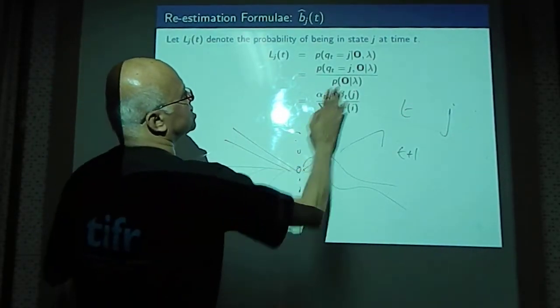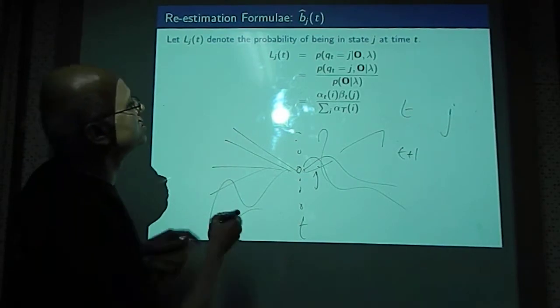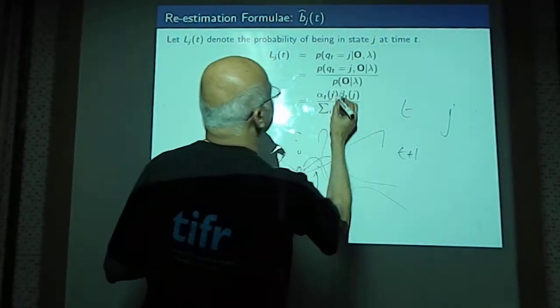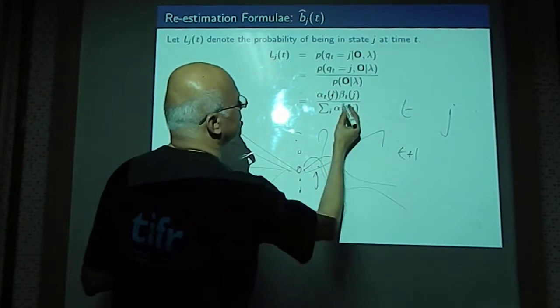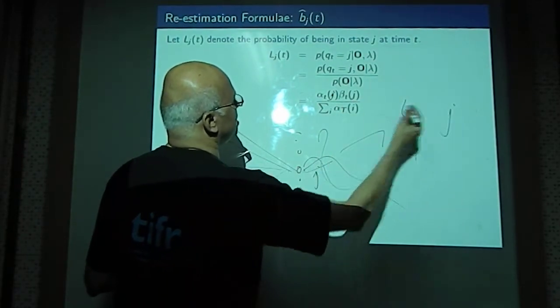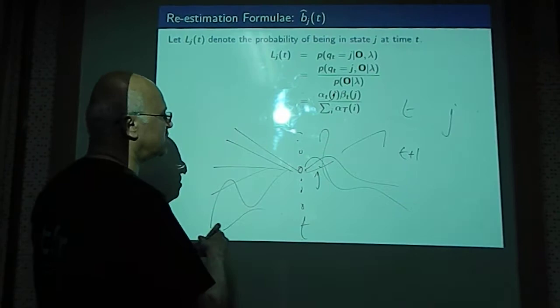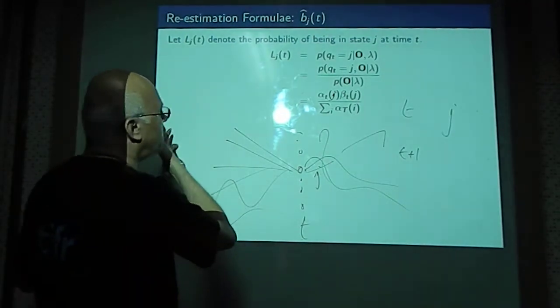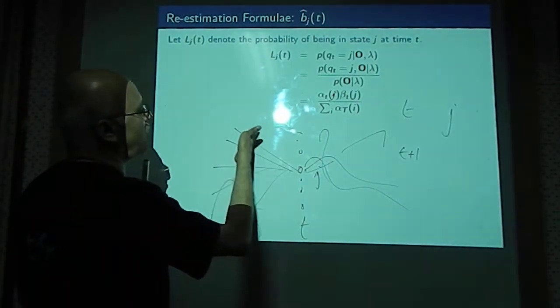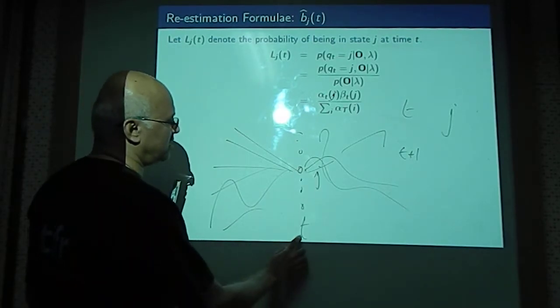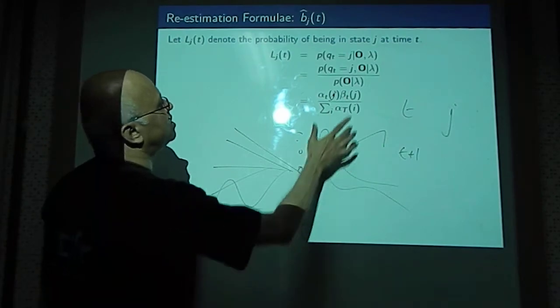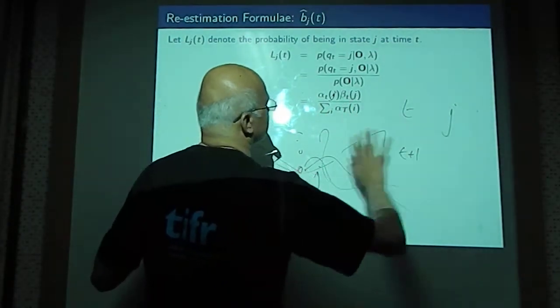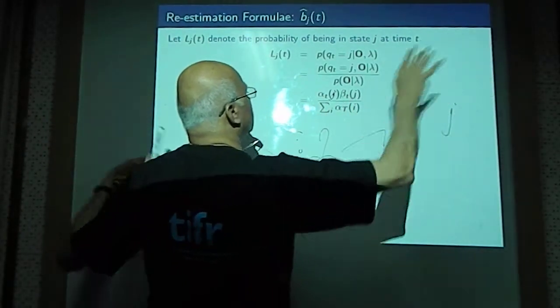That is given by alpha_t of j. And the rest of the observation should be explained by the beta_t of j. So the product of them computes the probability of all the paths such that they pass through state j at time t and again fan out in whatever possible way.